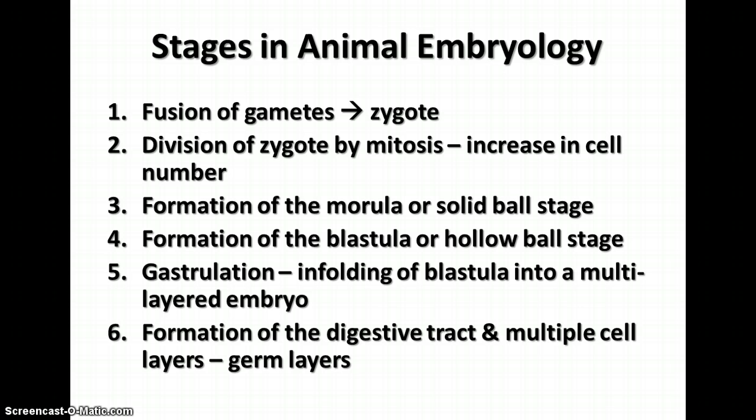The cells will continue dividing and increasing the size of this blastula until a certain point when the blastula begins to enfold into itself to begin to form a multi-layered embryo. This is followed by the development of the digestive tract and multiple cell layers, which are called dermal layers. We'll discuss each one of these in turn.